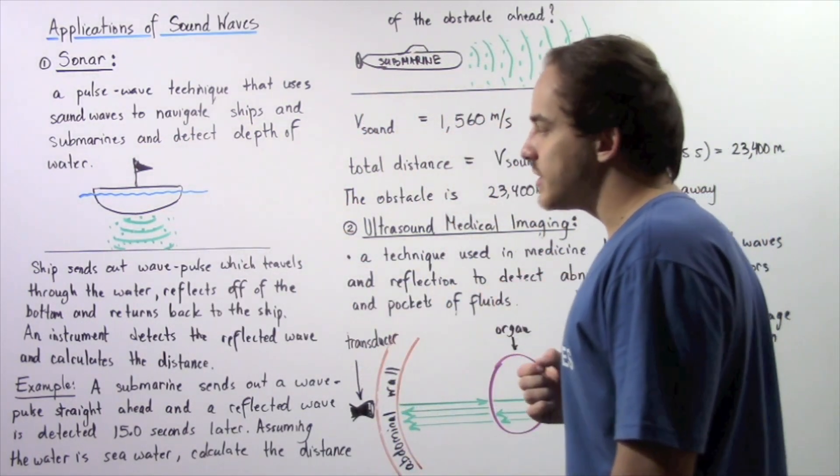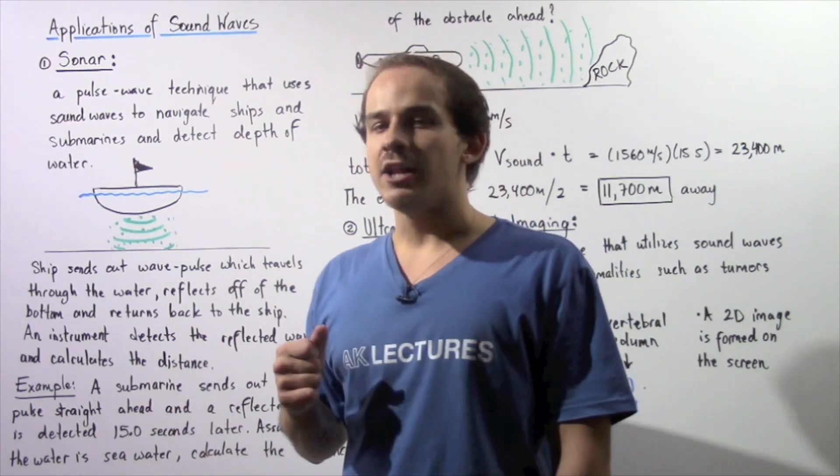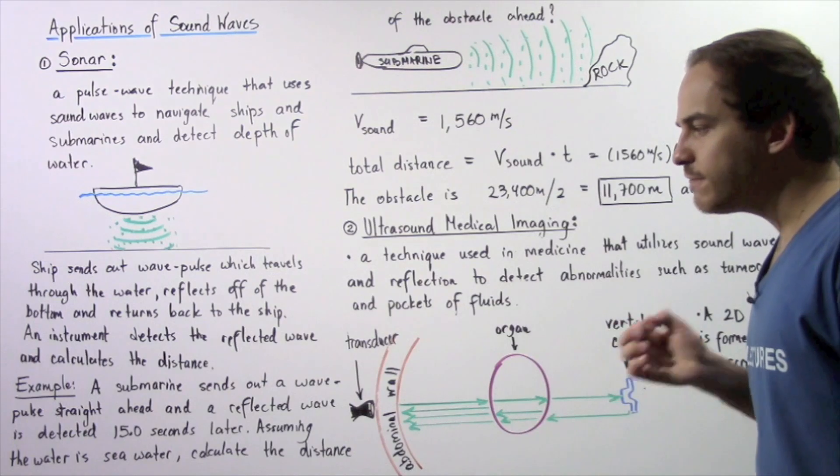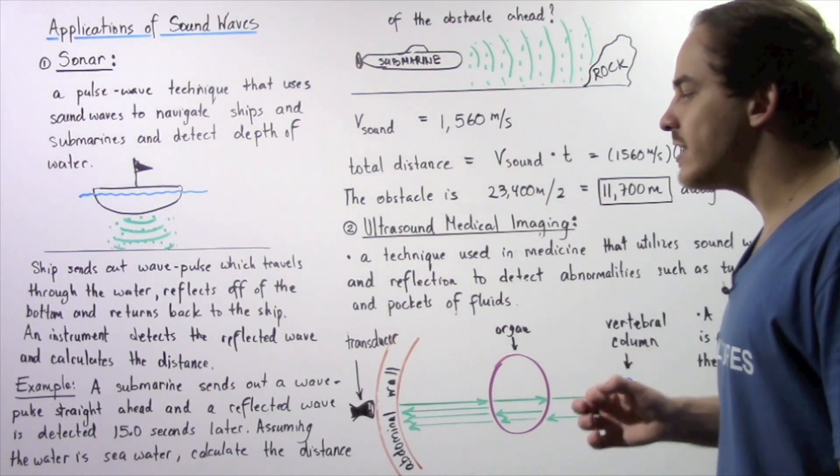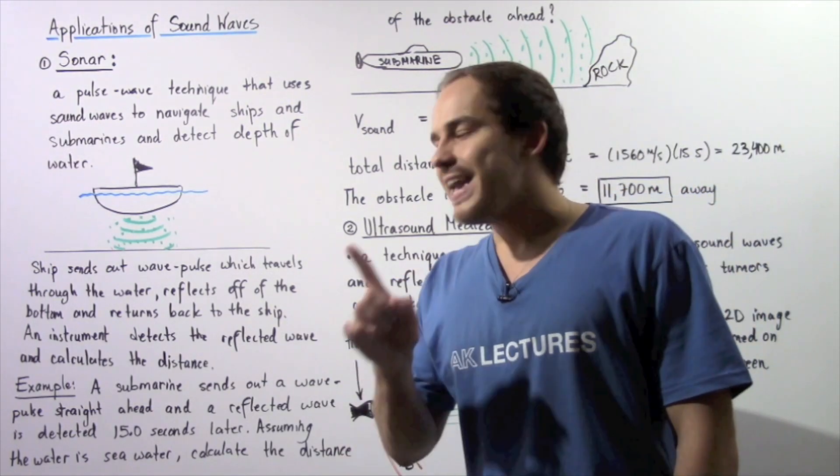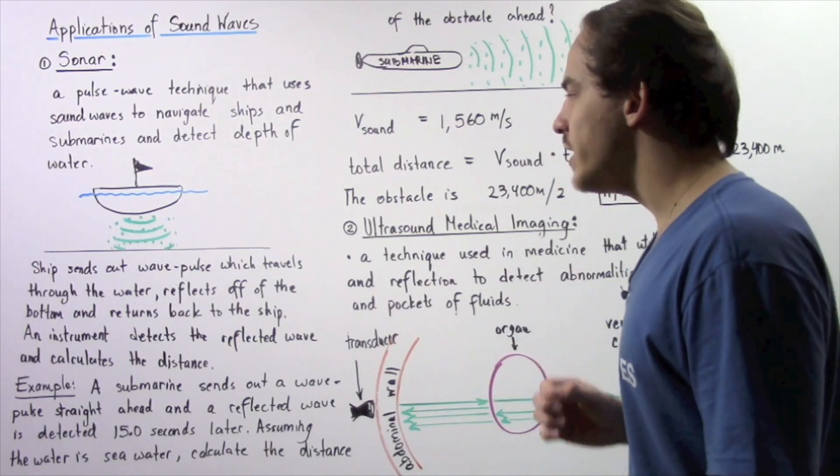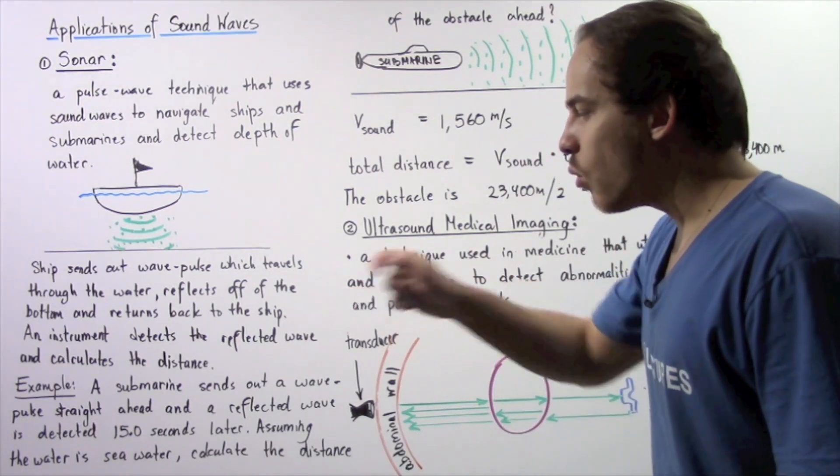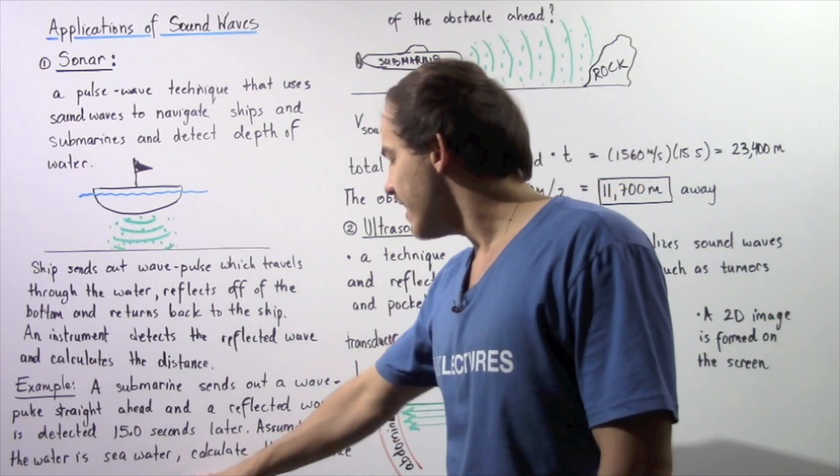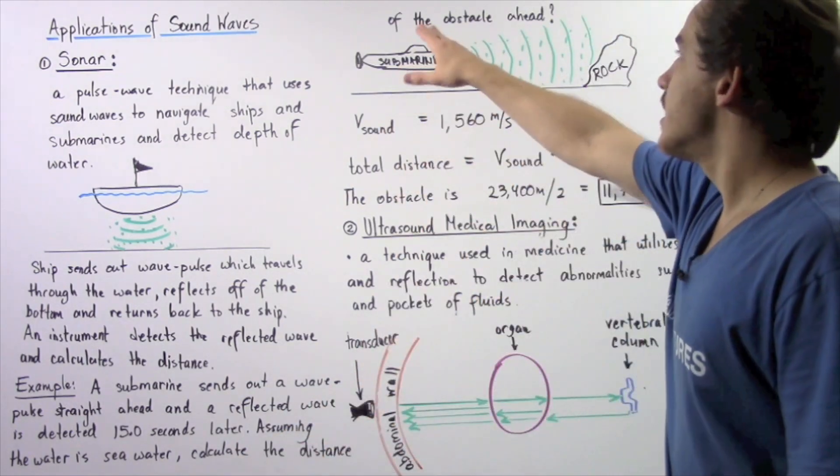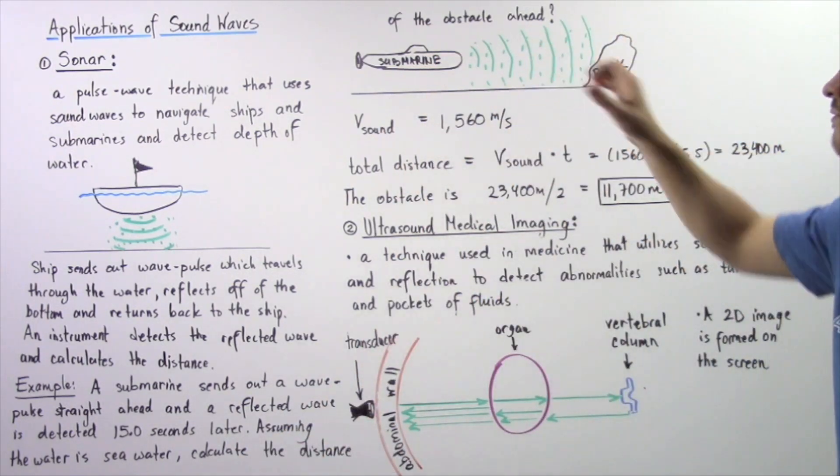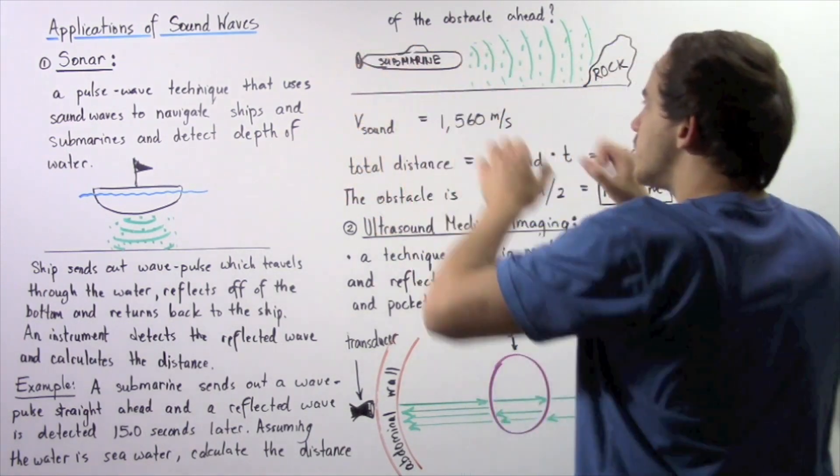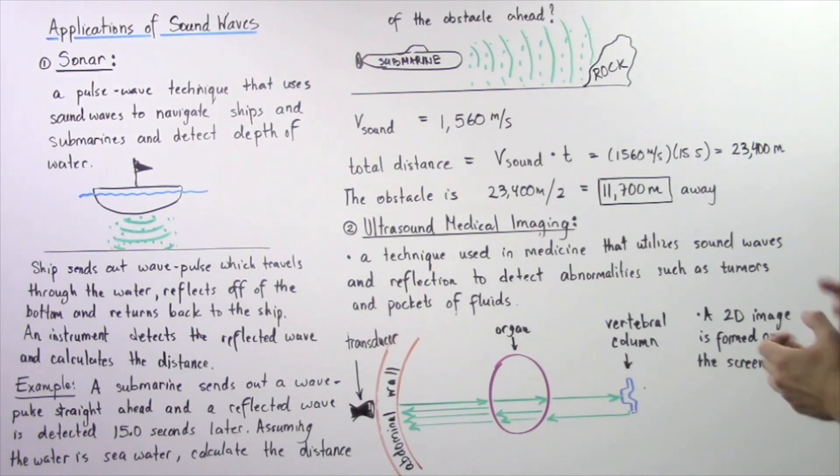Let's see how this happens by looking at the following example. Suppose a submarine sends out a wave pulse straight ahead and a reflected wave is detected by the submarine 15 seconds later. Assuming the water is seawater, calculate the distance of the obstacle ahead of the submarine.